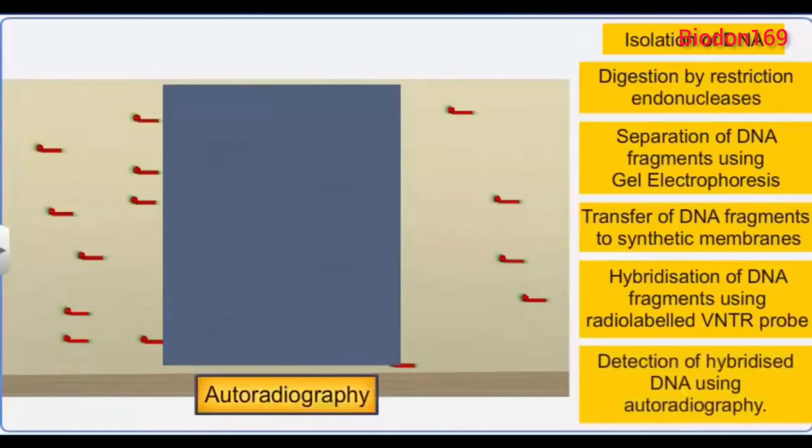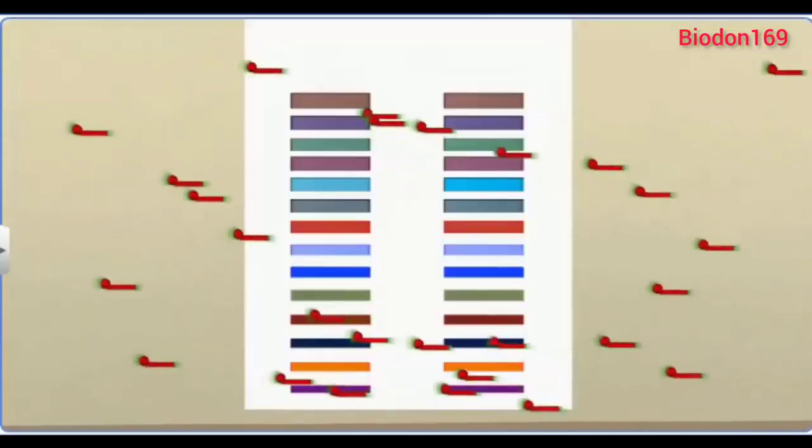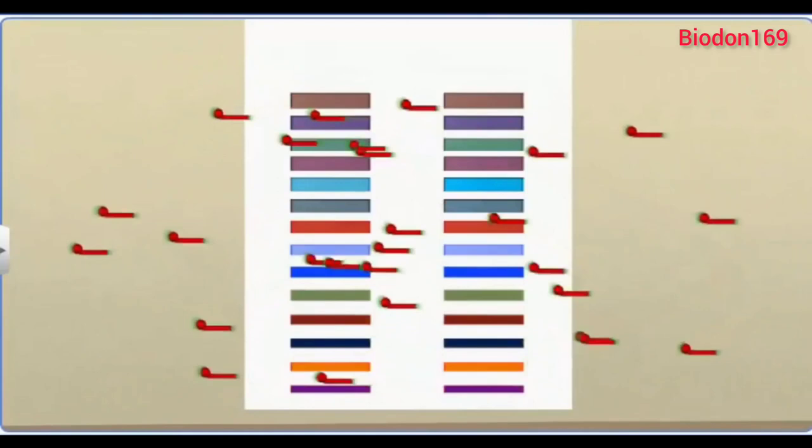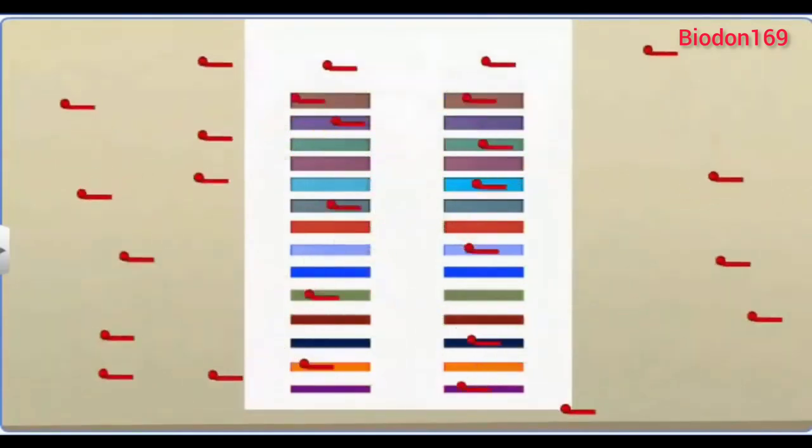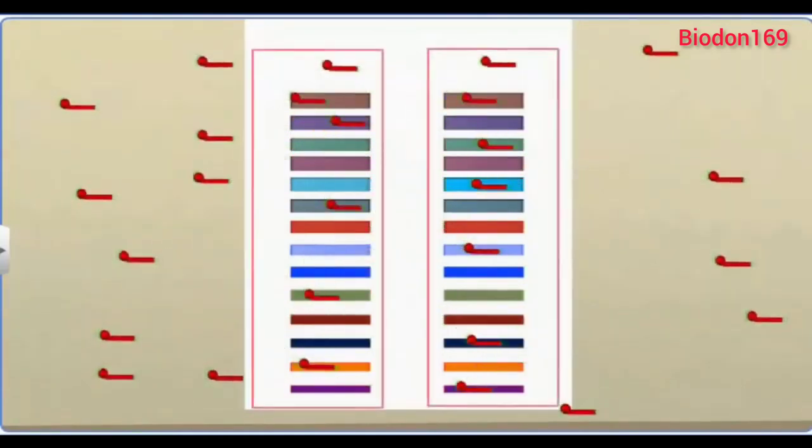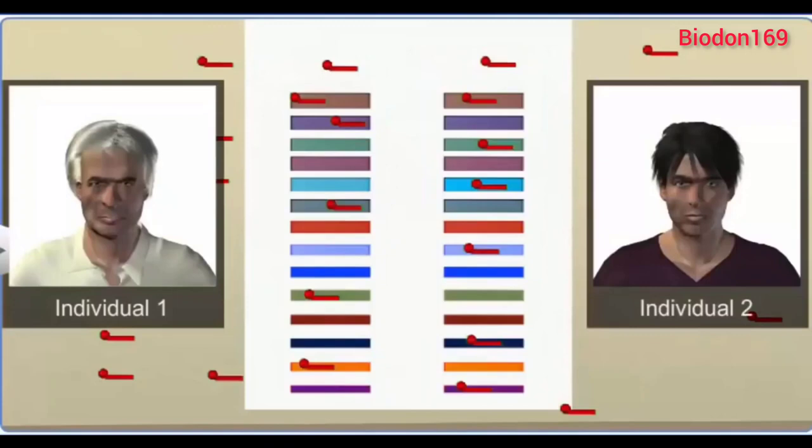Hybridization with the VNTR probe results in an autoradiogram which produces several bands of different sizes. These bands provide a characteristic pattern to an individual's DNA and vary from one individual to another, except in identical or monozygotic twins.